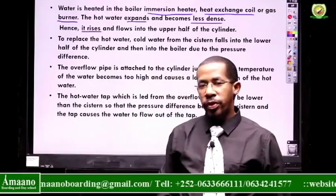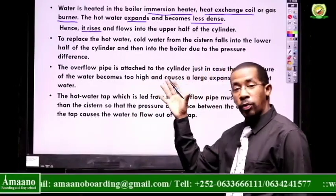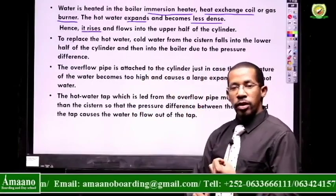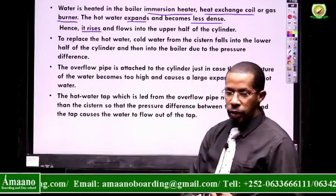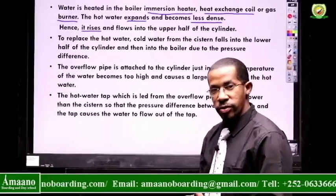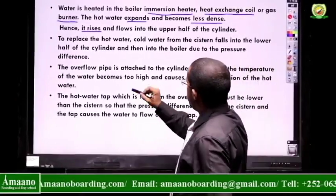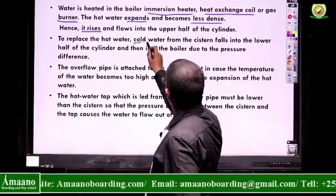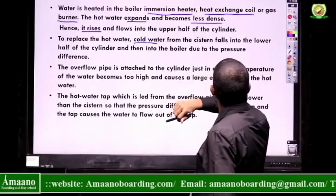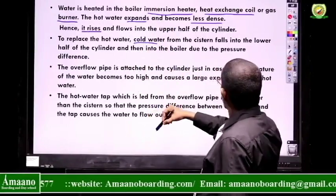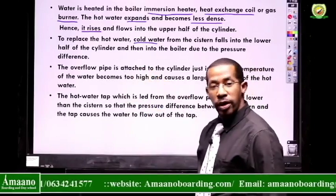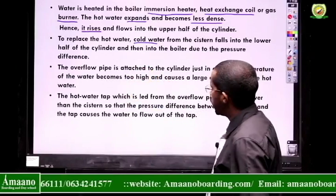From our previous lesson, we know these are the marking points for convection currents questions: you heat the fluid, it expands, becomes less dense, and then it rises. Then the cold water, which was in the tank in the loft — in the cistern — falls down to fill the place initially occupied by the hot water.